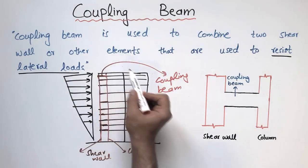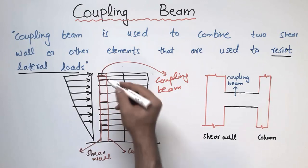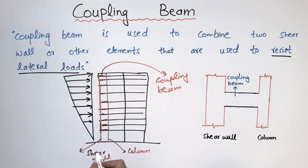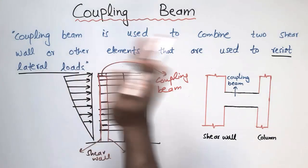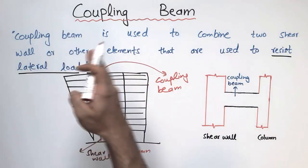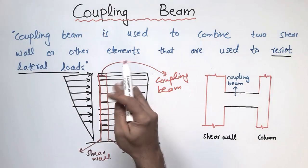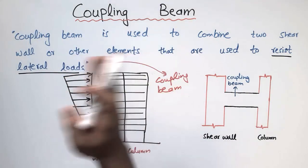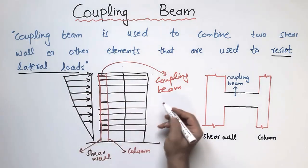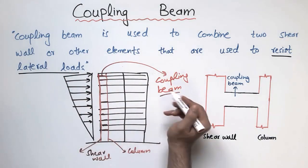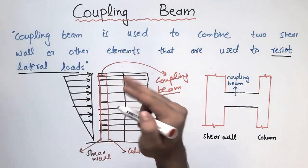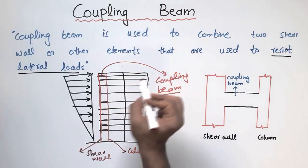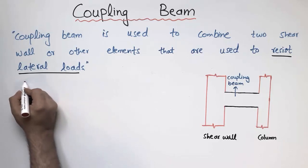It is not necessary that the coupling beam only connects a shear wall and a column. On the left side there may be no shear wall but only a column, so it can also connect column to column, or shear wall to shear wall. Its purpose is simply to connect those structural members which are used to resist earthquake loads and lateral forces. Now, there are two main types of coupling beam: the conventionally reinforced coupling beam and the diagonally reinforced coupling beam.